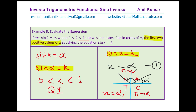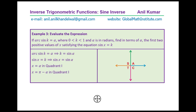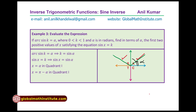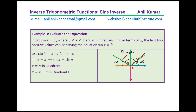This is a very important question to understand — how do we derive other principal values from the given condition. Here is how you should write this in your test paper, showing that sine is positive in quadrant 1 and quadrant 2, so the second value is pi minus alpha.